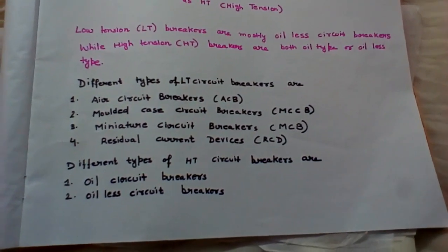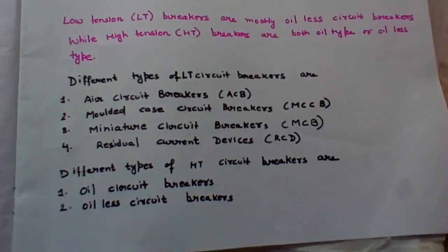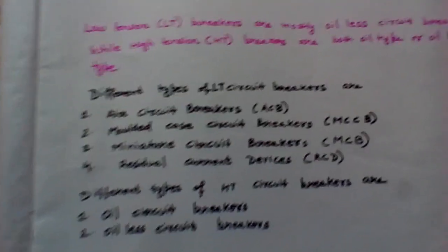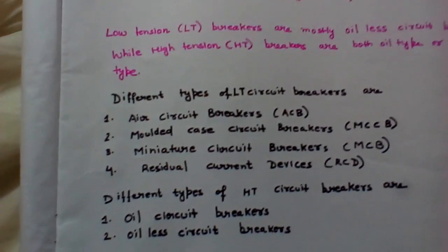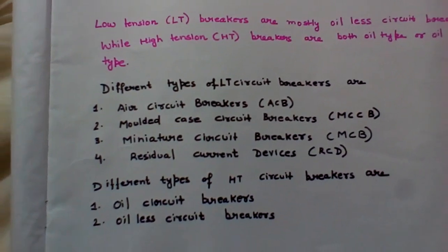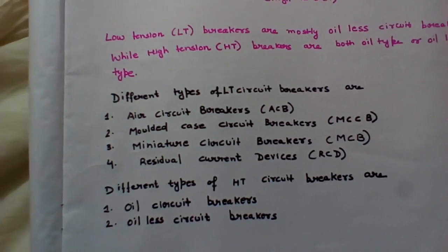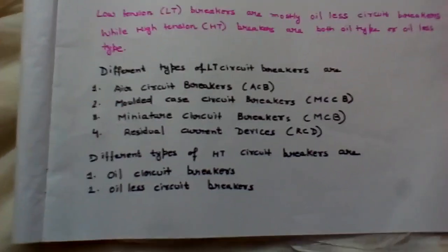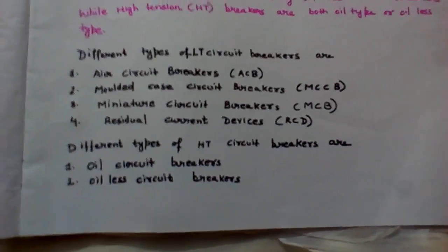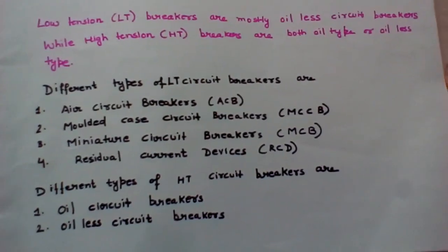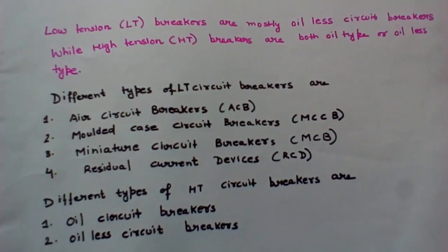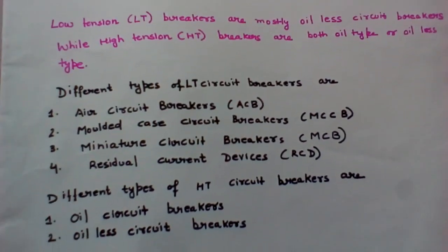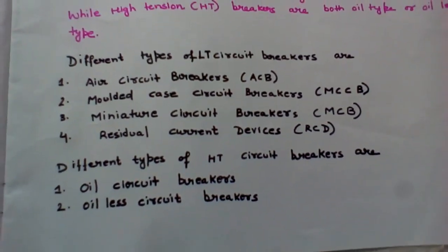Let us first go to the LT circuit breakers. As you can see on the screen, the different types of LT circuit breakers are: air circuit breaker, also called ACB; molded case circuit breaker, called MCCB; miniature circuit breaker, MCB — which all of you are familiar with as it is a common switching device used in our homes; and residual current device, called RCD.